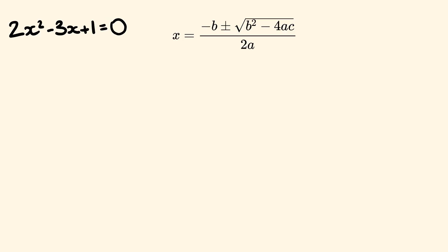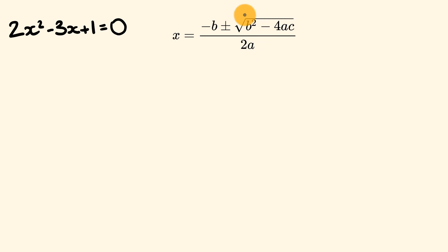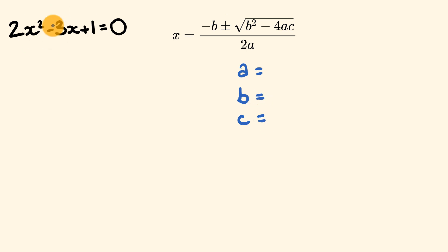For our first example, we have the equation 2x squared minus 3x plus 1 is equal to 0, and we're going to solve that using the quadratic formula. Our first step is to work out what values we'll be putting into the formula. We have the values for a, b, and c, and we work these out from our equation. The value in front of x squared is the value of a, so a is equal to 2.